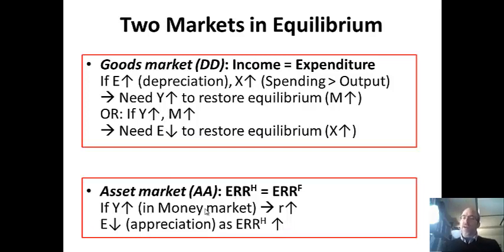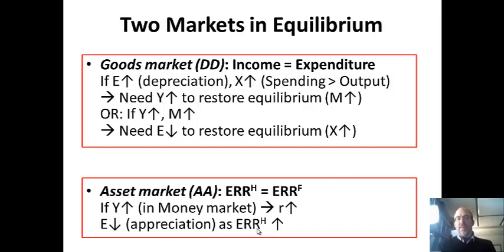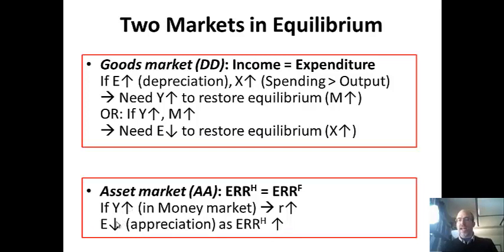The same logic applies to expected rate of return. If Y goes up, in macroeconomics the interest rate goes up because money demand goes up, and so ERR goes up. The way to bring it back down is to appreciate the currency. So you'll have a combination with a strong Y and a strong dollar. These can also go in the other direction.